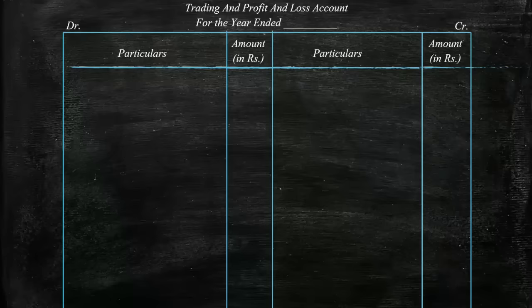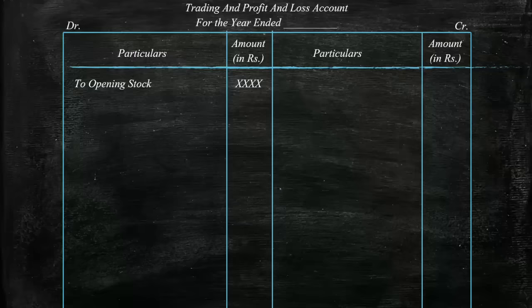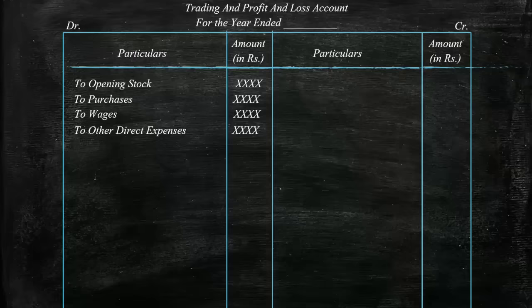This whole account is divided into two parts: the trading account and the profit and loss account. We start with the trading account. On the debit side, we write opening stock, then purchases, then wages, and then other expenses. Always remember that we add the expression 'To' with every account written on the debit side. On the credit side, we write sales and closing stock, and we add 'By' to every account instead of 'To'.